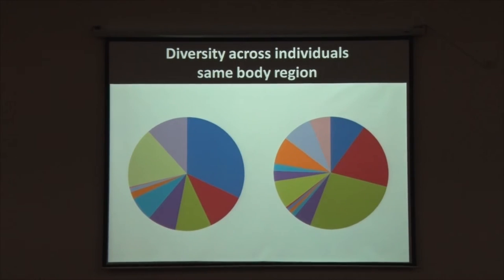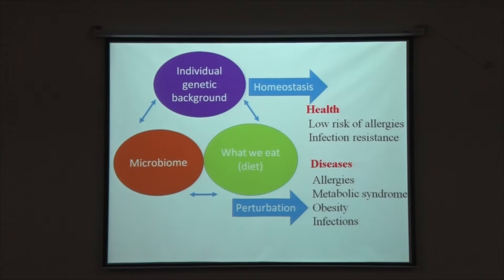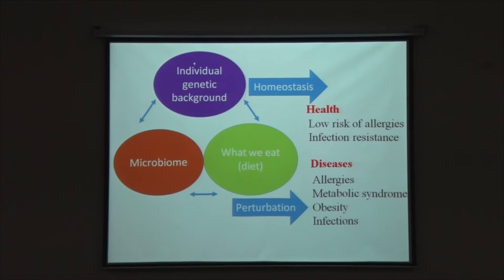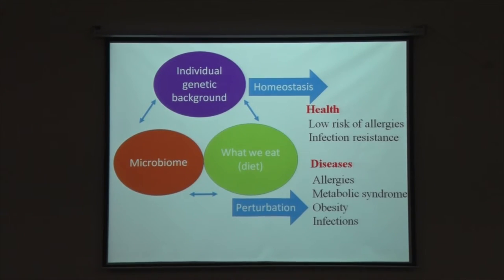This is real data from two individuals at one specific body part, and you can see that across these two individuals, even in the same body part, there are large and significantly meaningful differences. The reason for so much diversity within an individual and between individuals comes down to individual genetic background. The microbiome and the individual genetic background interact, and they also interact with the environment — especially diet, which strongly influences the gut microbiome.